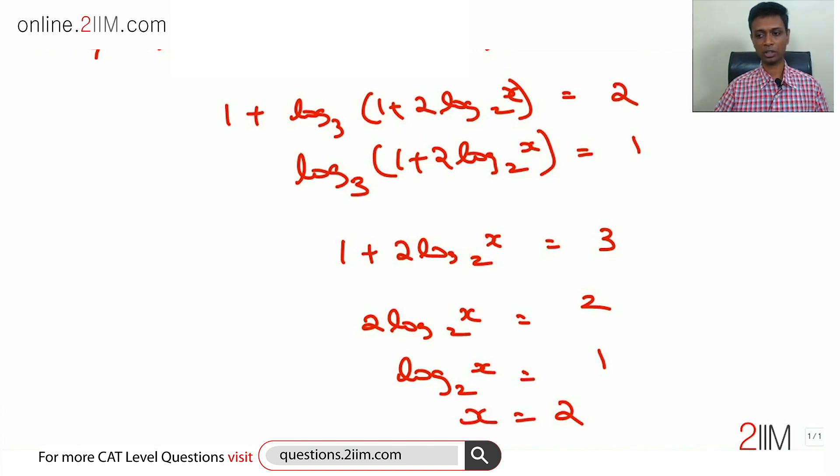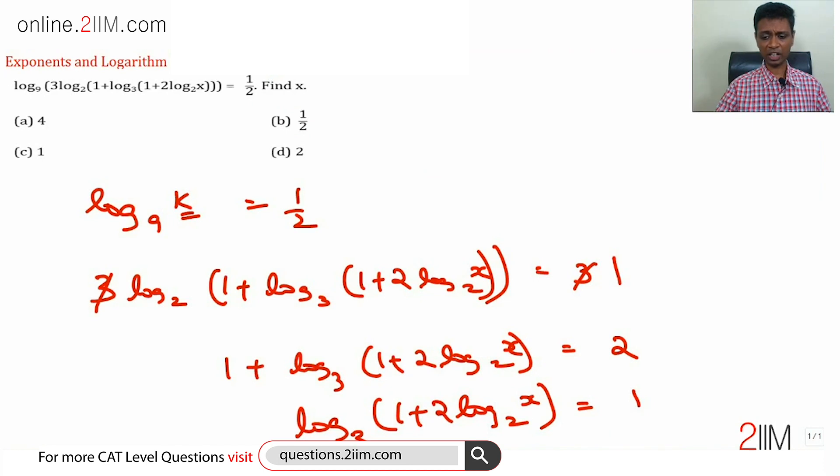Let me go back up and reiterate this point. We know log to the base 9 of something is 1 by 2, that something is 3. 3 gets cancelled, so this part is 1. So this part is 2 because log to the base 2, this part is 1. This final part is 3 and keep simplifying like that. Once we know that we are starting from the outermost bracket, questions become much simpler.